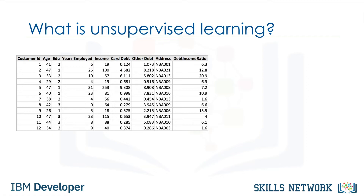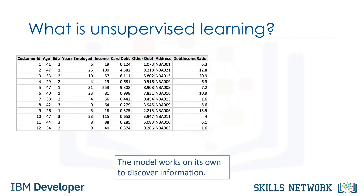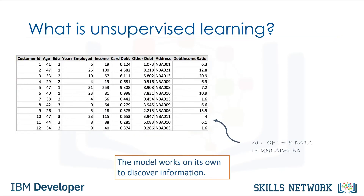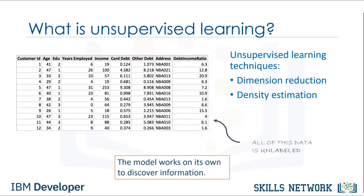Since we know the meaning of supervised learning, what do you think unsupervised learning means? Unsupervised learning is exactly as it sounds — we do not supervise the model, but we let the model work on its own to discover information that may not be visible to the human eye. It means the unsupervised algorithm trains on the dataset and draws conclusions on unlabeled data. Generally speaking, unsupervised learning has more difficult algorithms than supervised learning, since we know little to no information about the data or the outcomes to be expected. Dimension reduction, density estimation, market basket analysis, and clustering are the most widely used unsupervised machine learning techniques.